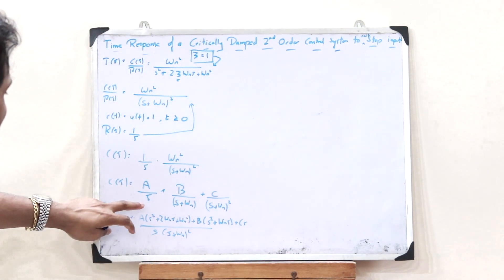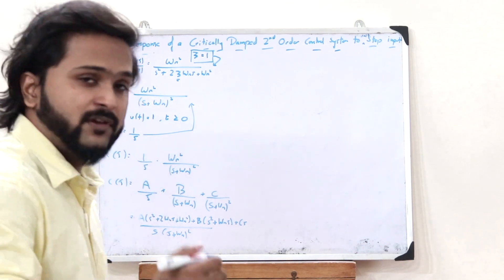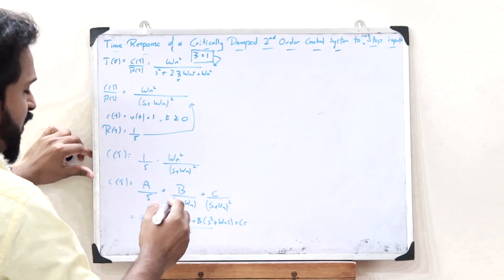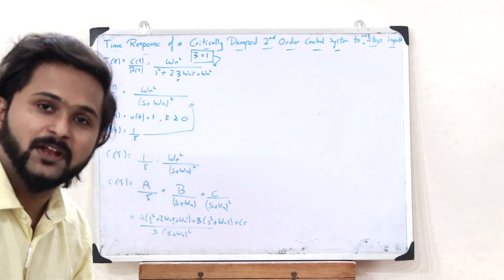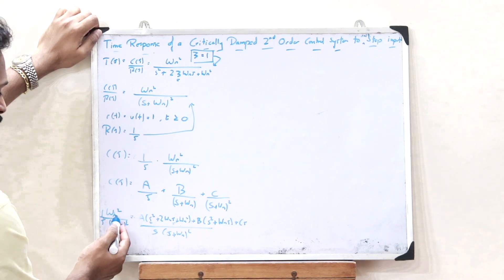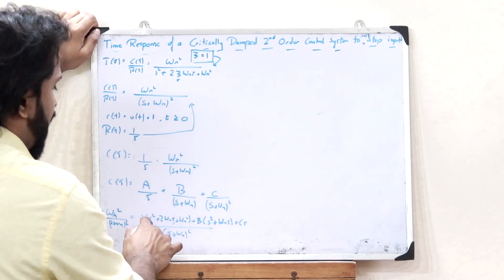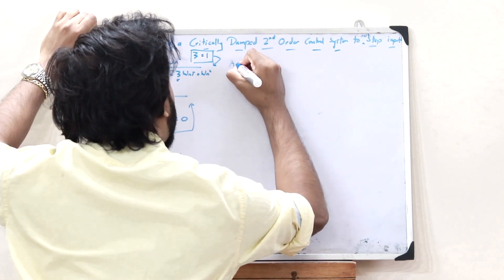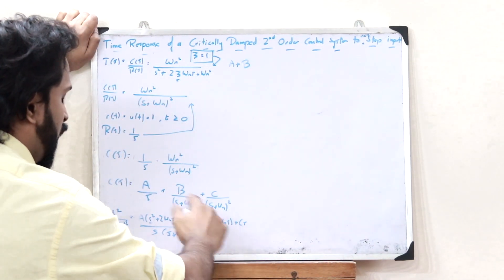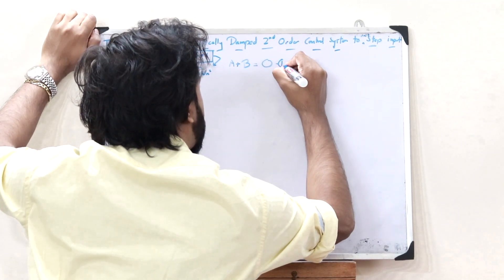We equate the two numerators to get three equations. Equating coefficients of s squared: A + B = 0 — equation 1. Equating coefficients of s: 2·omega_n·A + B·omega_n + C = 0 — equation 2. Equating the constants: A·omega_n squared = omega_n squared — equation 3.